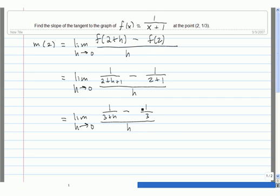What we want to do is simplify this entire expression and see if we can cancel this h out of the denominator. The way to do that, when we have the difference of two fractions in the numerator, is to get a common denominator.